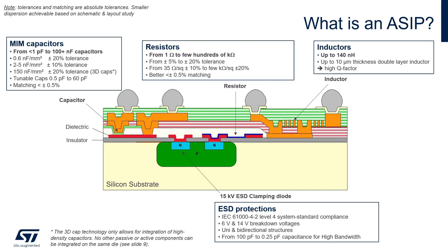The process consists in a thin film deposition of different metal and dielectric layers on a silicon substrate, in which active components can be diffused. Either plastic or CSP type packages like flip-chip can be considered.